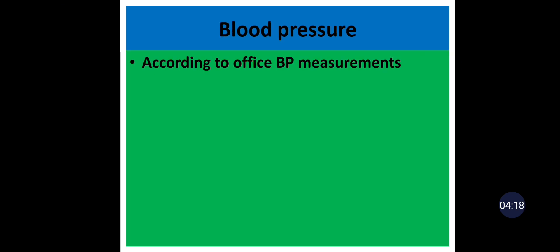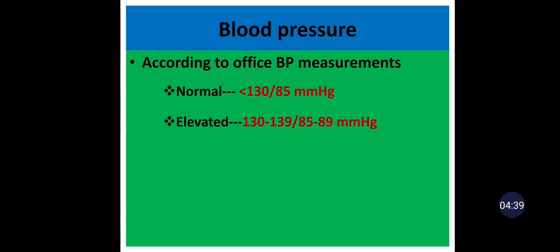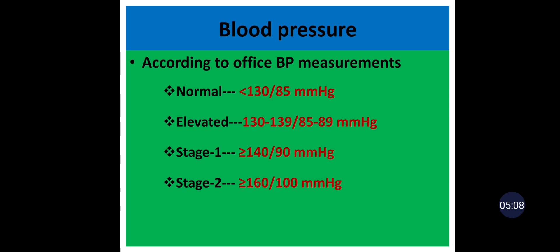Blood pressure can be measured at the office by healthcare providers or at home by the patient. According to office blood pressure measurements, normal blood pressure is a systolic less than 130 mmHg and diastolic less than 85 mmHg. Elevated blood pressure or pre-hypertension: systolic 130–139 mmHg and/or diastolic 85–89 mmHg. Stage 1 hypertension: systolic ≥140 mmHg and/or diastolic ≥90 mmHg. Stage 2 hypertension: systolic ≥160 mmHg and/or diastolic ≥100 mmHg.